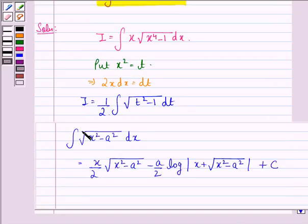Now we know that integral of square root x square minus a square dx is equal to x by 2 into square root x square minus a square minus a by 2 into log mod of x plus square root x square minus a square plus C. So in this we have x as t and a is 1.